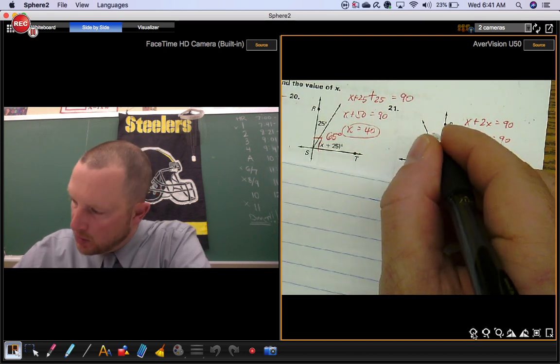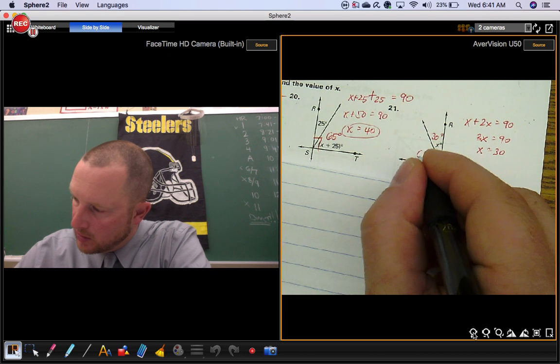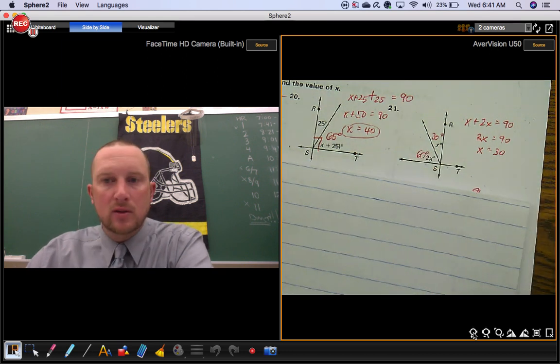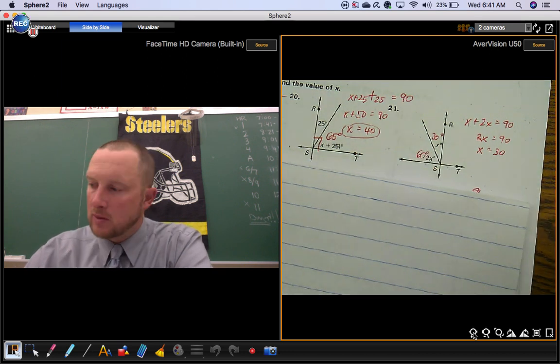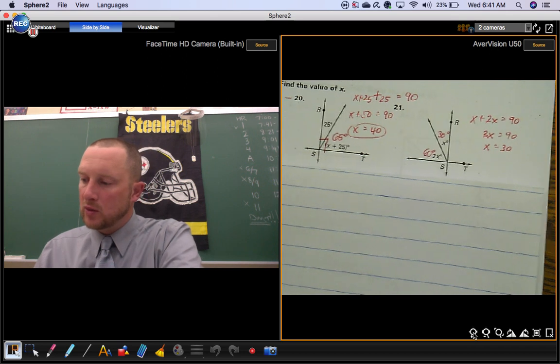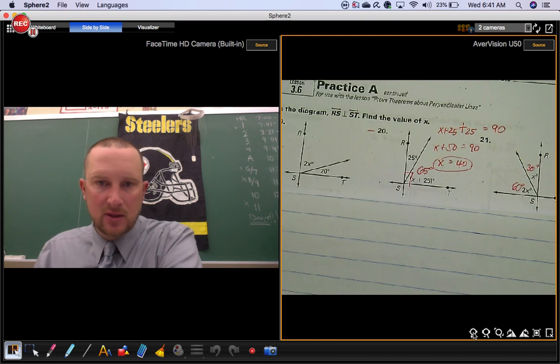And then once you have x, you can plug in. x is 30. 2 times 30 is 60. So if you can do 20 and 21, 19 isn't that bad.